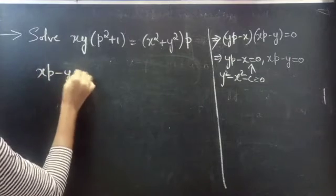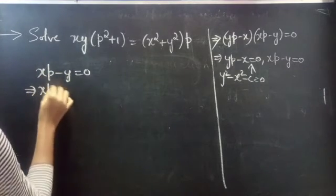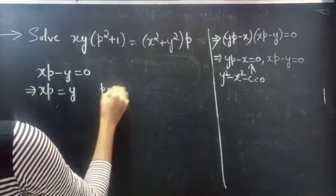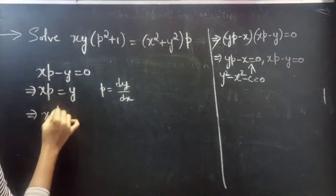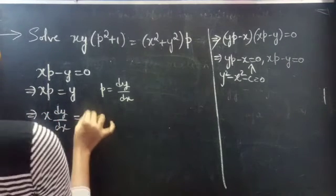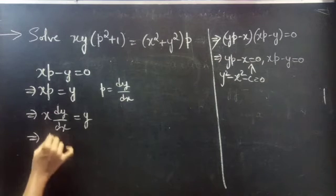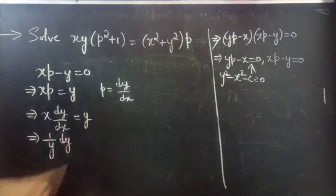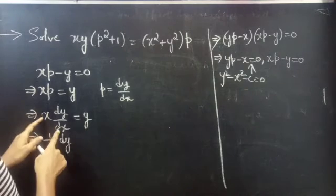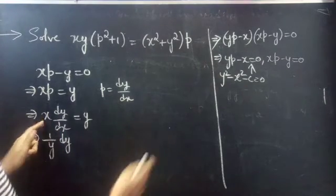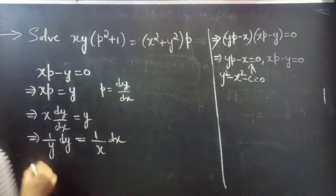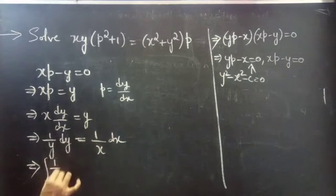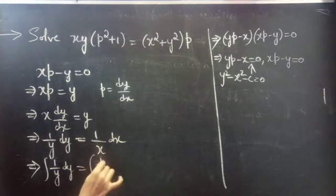Now consider the second factor: xP minus y equals to 0. Then xP equals to y. Put P equals to dy by dx; then x into dy by dx equals to y. Rearranging, 1 by y into dy equals 1 by x into dx. Here the variables are separable, so we can integrate on both sides: integral 1 by y dy equals integral 1 by x dx.